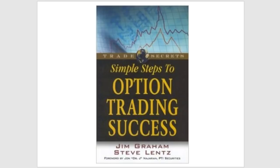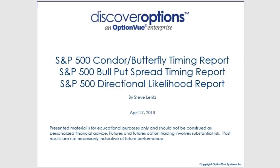We have three reports. The Condor Butterfly Timing Report is for those that sell options premium in a delta neutral fashion. The Bull Put Spread Timing Report is for those that like to sell put premium out of the money, roughly 30 days away. And then the Directional Likelihood Report, which has taken on a bit of a different flair recently.